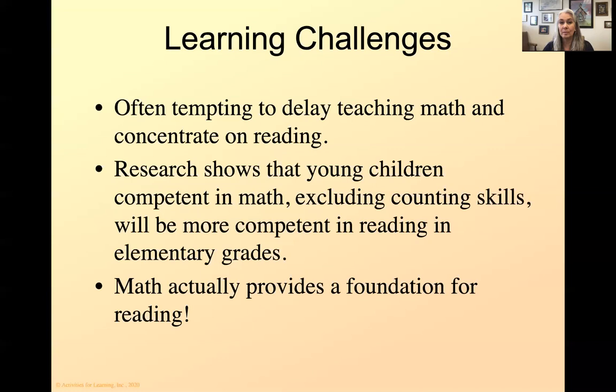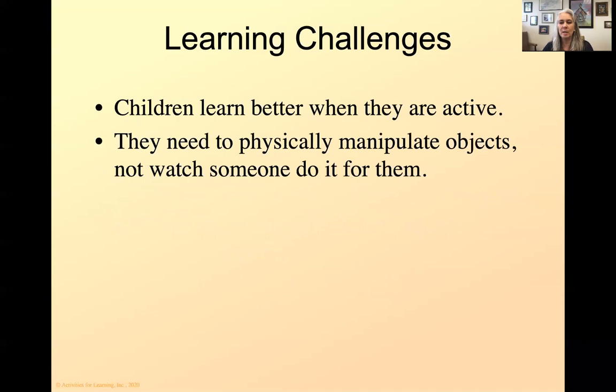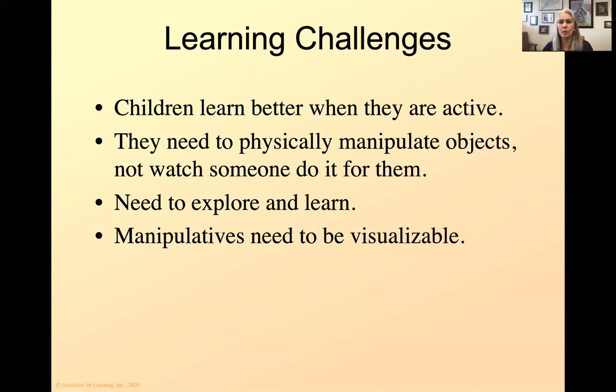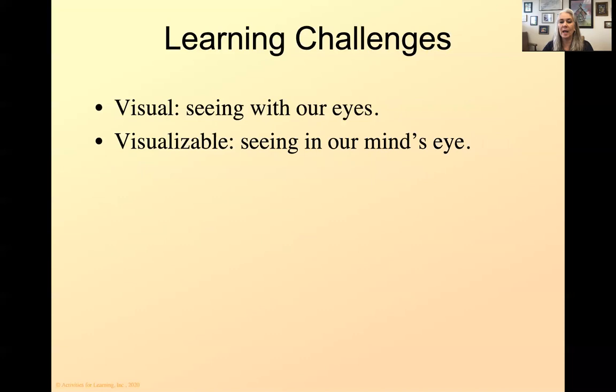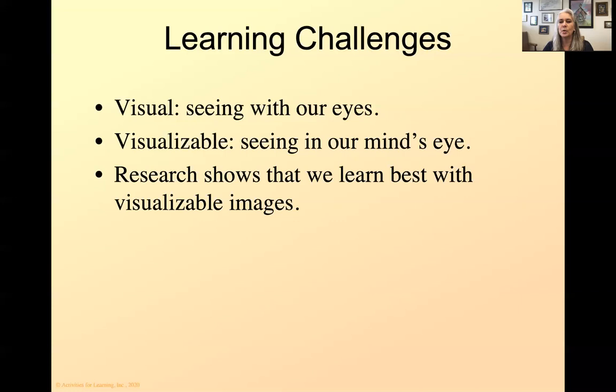Children learn better when they're active. They need to physically manipulate objects to touch them and not watch somebody else do it. Let them do it. Let them explore it. You know what it's like to take your child grocery shopping, especially those young ones. They have like octopus arms and they can reach both sides of the aisle. They want to touch things. Same thing with their math. Let them touch it. They need to explore and learn. But then whatever they're exploring and learning with needs to be something that's visualizable, meaning it can get in their mind so that they can see it. So visual is seeing with our eyes. Visualizable is seeing with our mind's eye. So I can close my eyes and I can see something. That's something that's visualizable. Research shows that we learn best with visualizable images. So this is what we want to use.